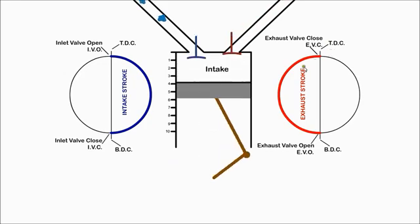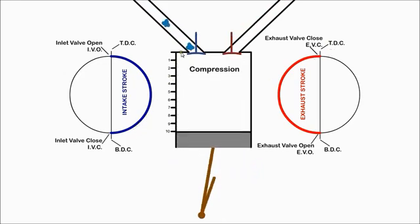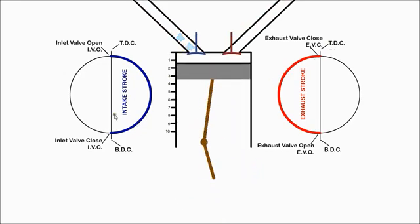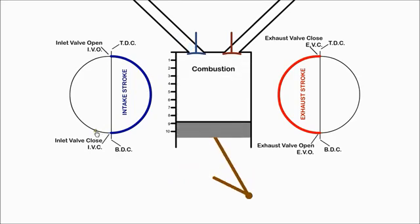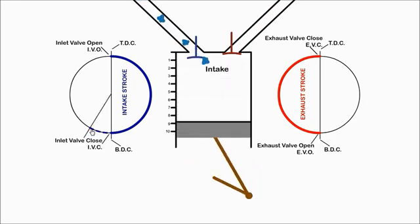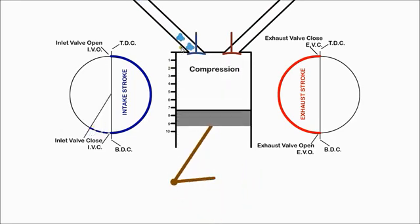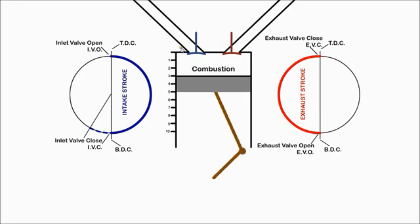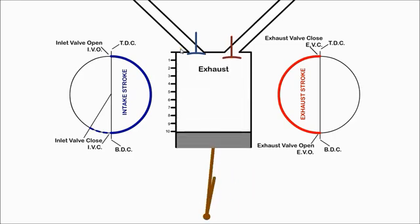If we look at the inlet valve closing at BDC, we see that a flow of air is blocked behind the valve from entering the cylinder. It would be much better to delay closing the valve until the increasing cylinder pressure stops the flow. Then we get more air into the cylinder.